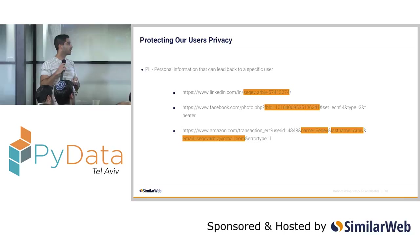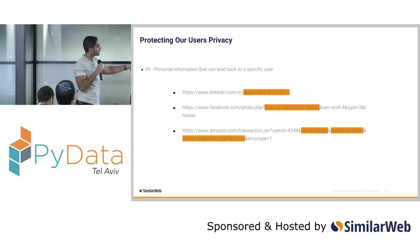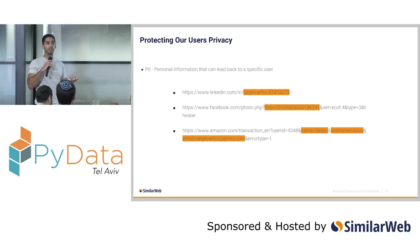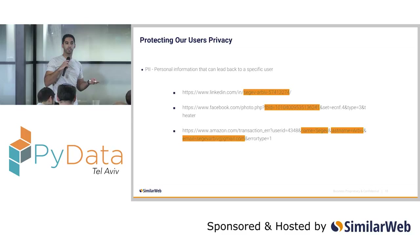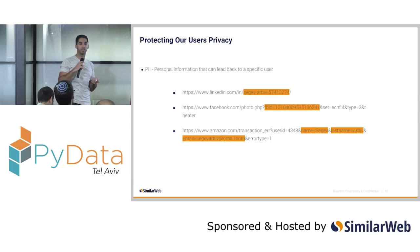We want to stay GDPR compliant. As you can see, some parameters are really identifying what's happening — the email, name, and surname. The current methods use rule-based heuristics to find those PIIs, but those parameters are constantly changing, especially in the dynamic world of URLs. So we wanted to see if we can extract more information from the URL itself to tackle this problem.